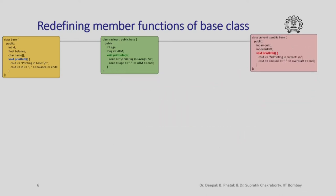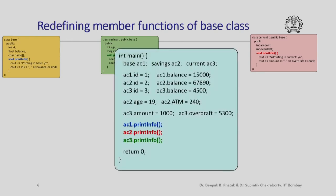Now that we have these class definitions and the definitions of the method print_info in these three classes, we want to see what is going to happen if I execute this program. Here I have declared three objects: AC1 of type base class, AC2 of type savings class, and AC3 of type current class. I am doing some initialization of the data members ID and balance for all of AC1, AC2, and AC3. AC2, being of the savings class, has a couple of additional data members which I am also initializing. Now I want to call print_info on each object and ask what is going to get printed.